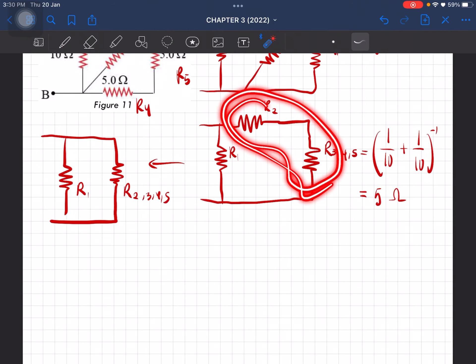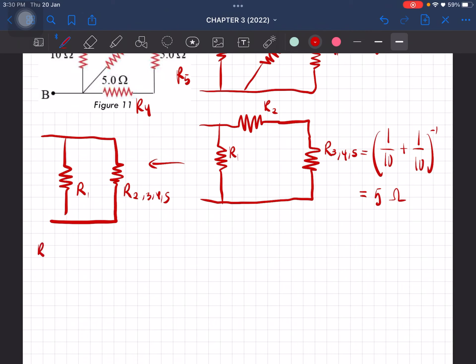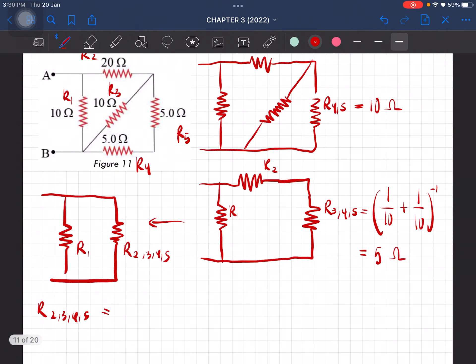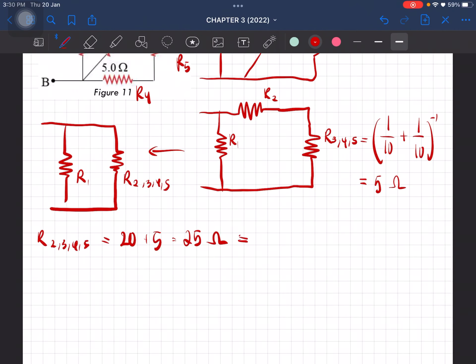So this here is connected in series. So R3, 4, 5 is R2, 3, 4, 5, is equal to 20 plus 5, which is equal to 25 ohm. I'm gonna call this Rx.